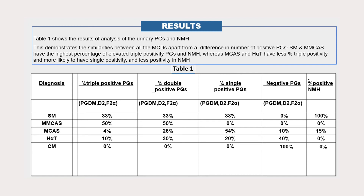Hereditary alpha tryptasemia demonstrated positivity in 60% of prostaglandin tests, with the majority being double or single positivity. We did not demonstrate any positivity in the N-methylhistamine group. Cutaneous mastocytosis, being limited to the skin, did not demonstrate any abnormalities in the urinary tests.